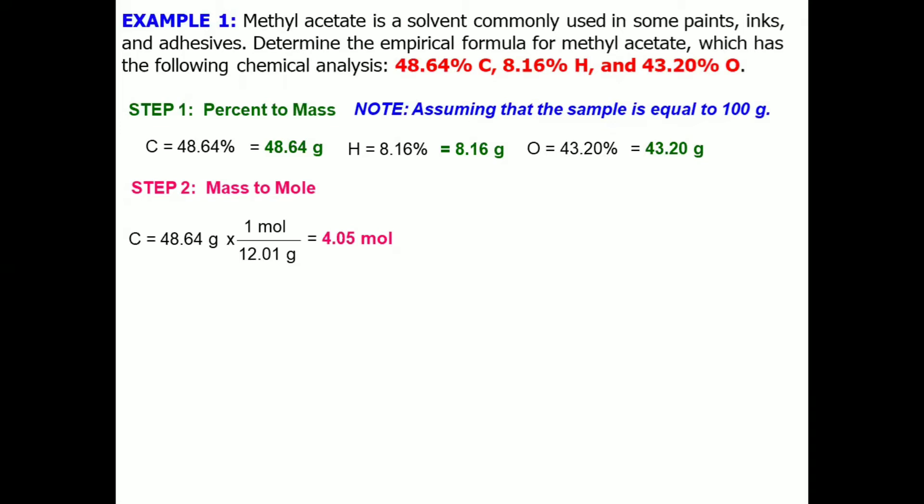The same method or process will be applied to hydrogen and oxygen. You may pause this video and do the computation first. And the answer for hydrogen is 8.08 mole, while oxygen is 2.70 mole. And we're done with the second step.